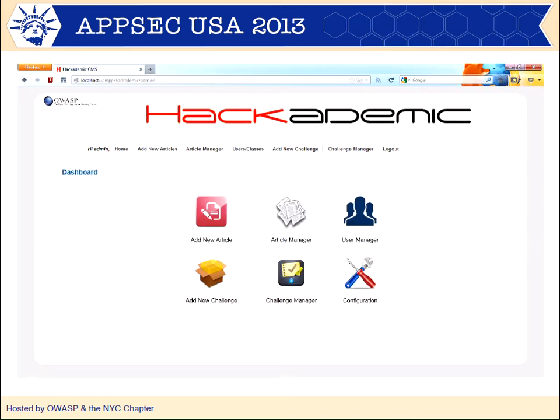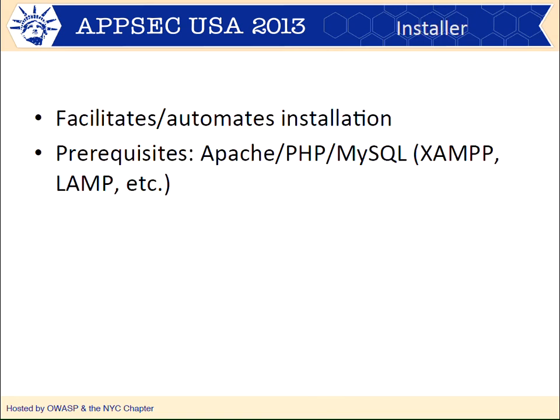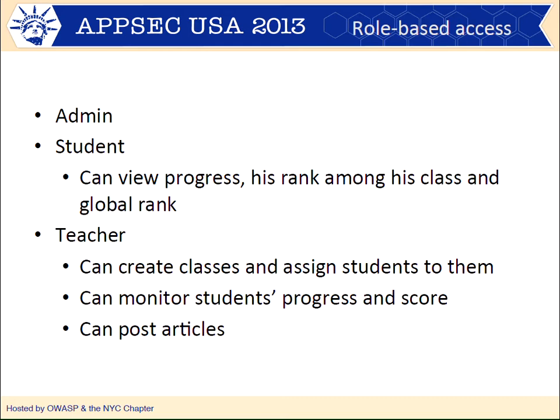At that time, the first Google Summer of Code came along. We had the chance to involve a student from India who worked on our project and developed a completely new user interface, which introduced some significant features. The first was role-based access control. In our new user interface we have different roles: a full administrator that can modify every setting, students that can solve challenges, see their progress and ranking among their class and globally, and a teacher role where the teacher can see how the class is doing, assign challenges one at a time, grade the class, post articles, and so on.